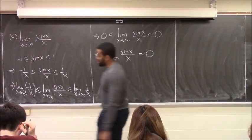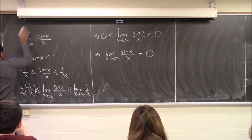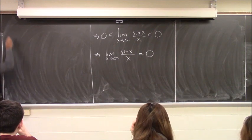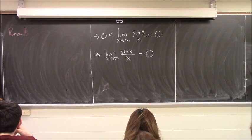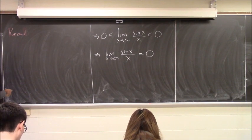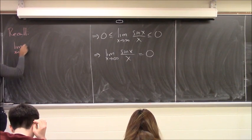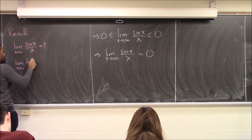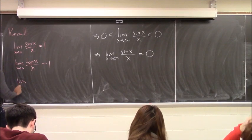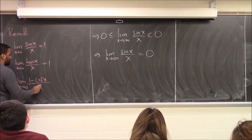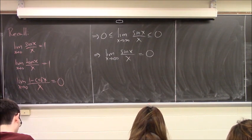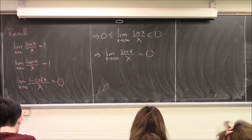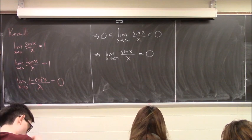Do you remember what I introduced before the last three? The special trig limits: the limit as x goes to 0 of sine x over x equals 1, and the limit as x goes to 0 of (1 minus cosine x) over x equals 0. You should have these memorized. Once you see trigonometry, try to plug in first, but otherwise think: can I apply the Squeeze Theorem? Can I apply one of these special limits?